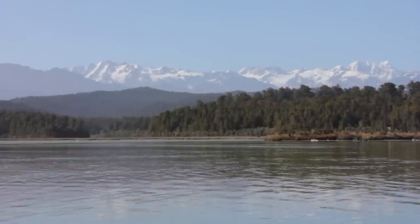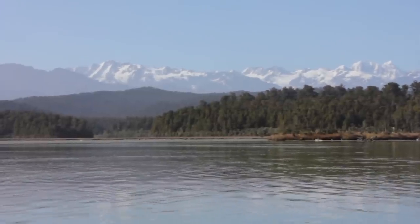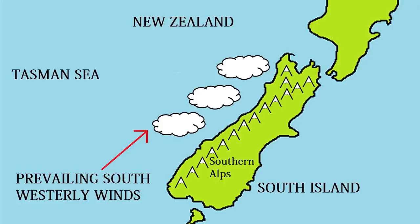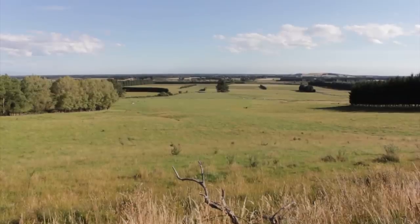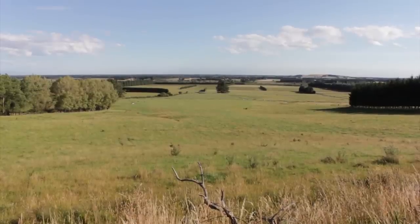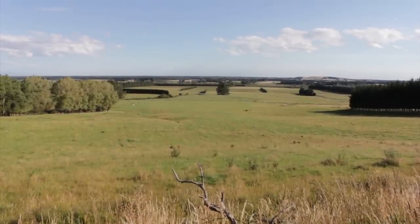For example, in New Zealand's South Island the prevailing westerly winds force moist air from the Tasman Sea to rise over the Southern Alps. Most of the rainfall is then dumped on the west coast, which is the wettest climate in New Zealand. The climate east of the ranges in Canterbury is dry.